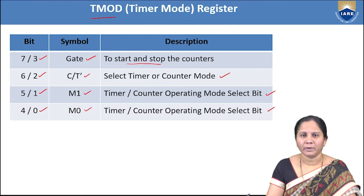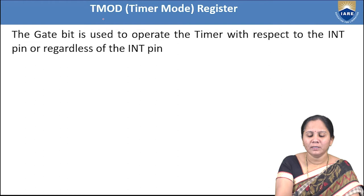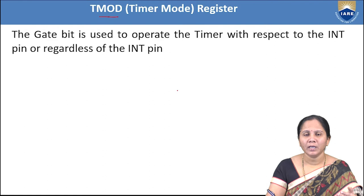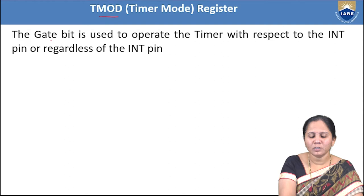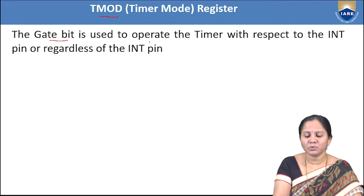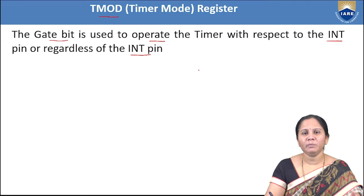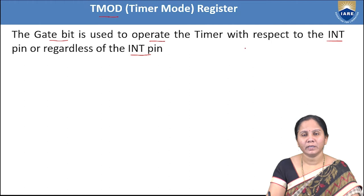The gate bit in the TMOD register is used to operate the timer with respect to the INT pin or irrespective of it — where INT means interrupt pin. In the 8051 pin diagram there are two interrupt pins: INT0 and INT1. The gate bit can be used to operate the timer with or without the interrupt pin.